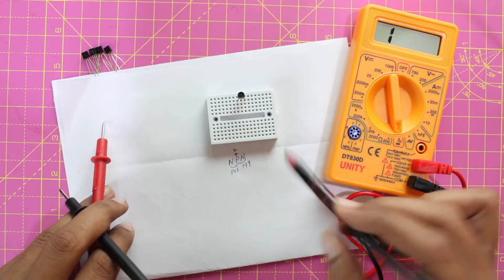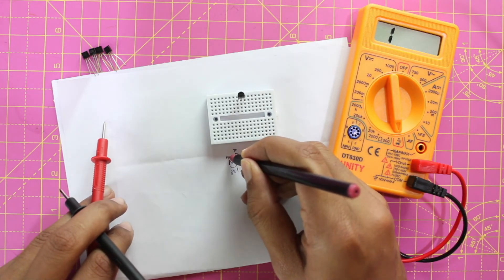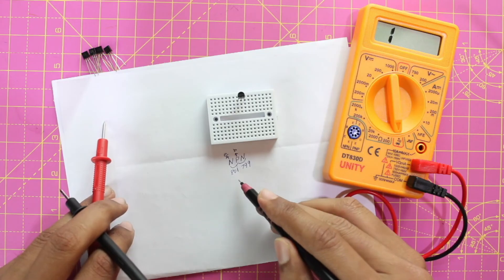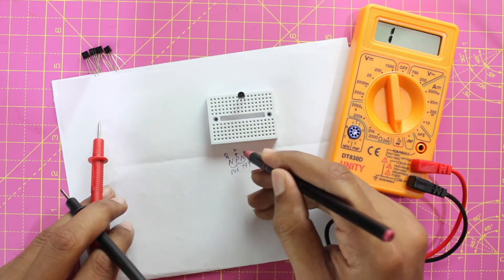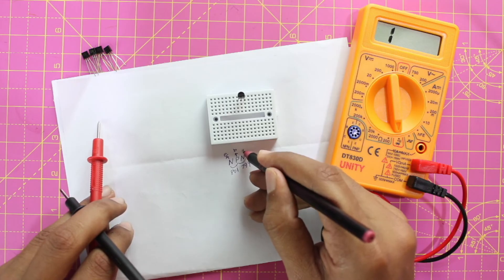Now as we know the first one is emitter, second one is base, obviously the third one is going to be the collector.